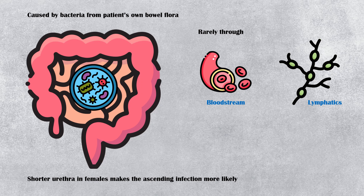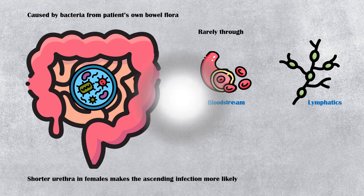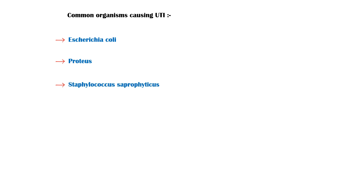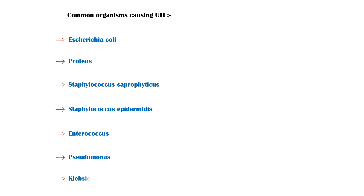Common organisms causing urinary tract infections include Escherichia coli, Proteus, Staphylococcus saprophyticus, Staphylococcus epidermidis, Enterococcus, Pseudomonas, and Klebsiella.